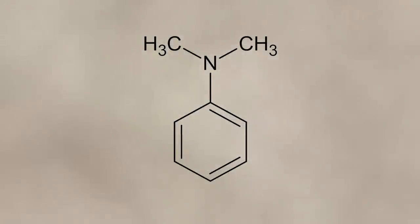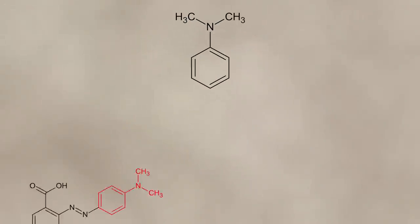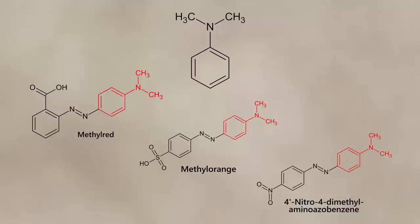Dimethylaniline is an organic building block which is often found in different azo dyes, and I have tried to synthesize it a few times before.